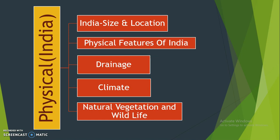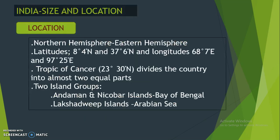In Physical Geography of India, the first unit is physical features of India, the third unit is drainage, the fourth is climate, and the fifth is natural vegetation and wildlife. In this video, we learn about India Location and Size.